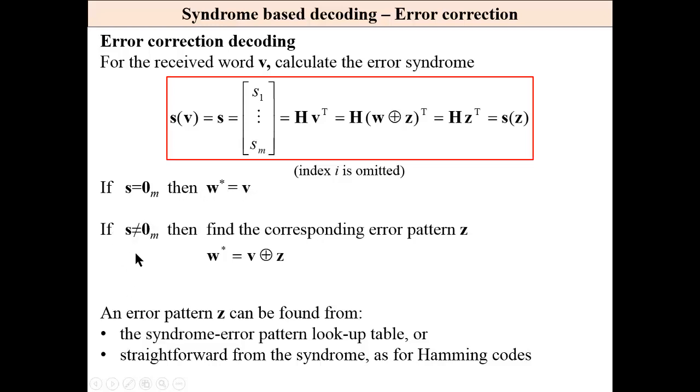If syndrome is different than zero, it means that we have an error. And then it is possible to find a corresponding error pattern.